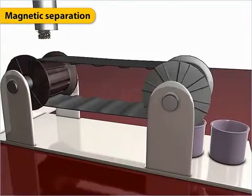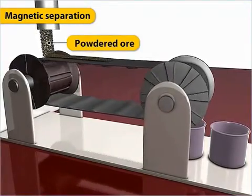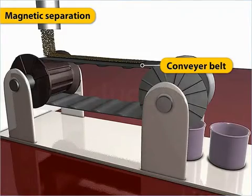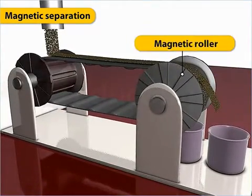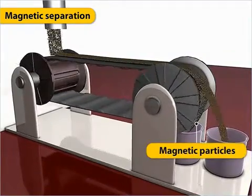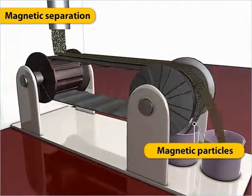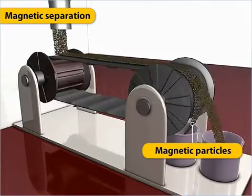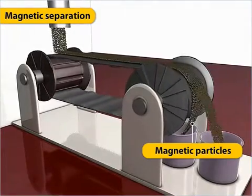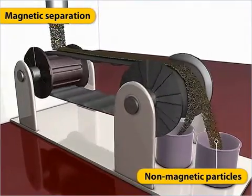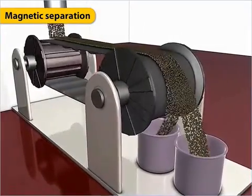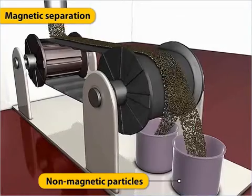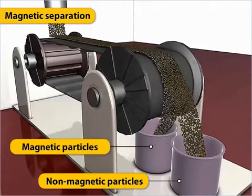In magnetic separation, powdered ore is passed over a conveyor belt running over two rollers, one of which is magnetic. The magnetic particles get attracted to the magnetic roller and travel a distance with the conveyor belt a little longer than the non-magnetic particles. Therefore, the non-magnetic particles drop down first, forming a heap, whereas the magnetic particles drop down a little later, forming a separate heap.